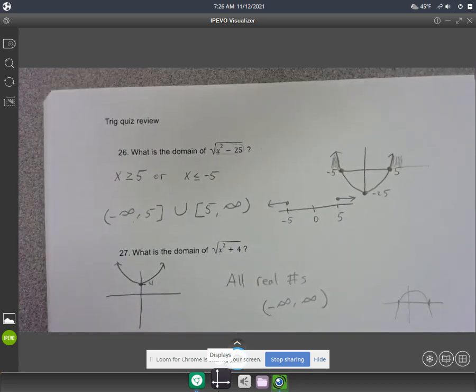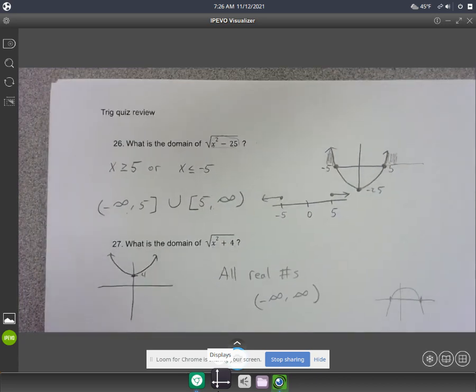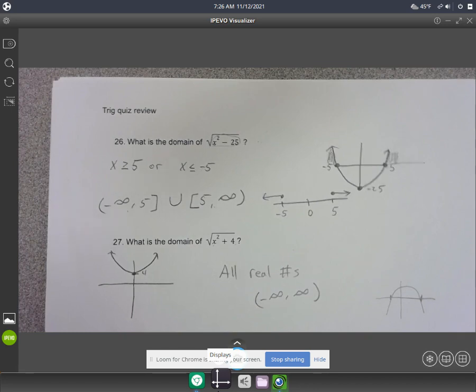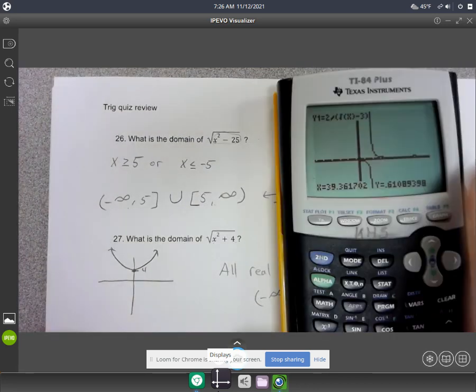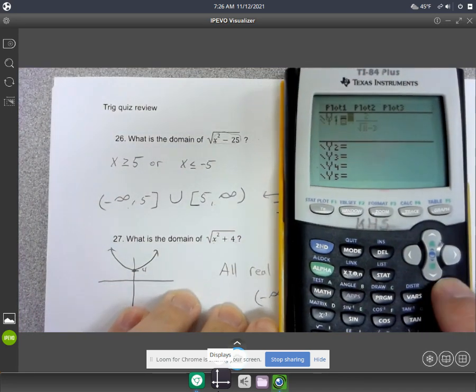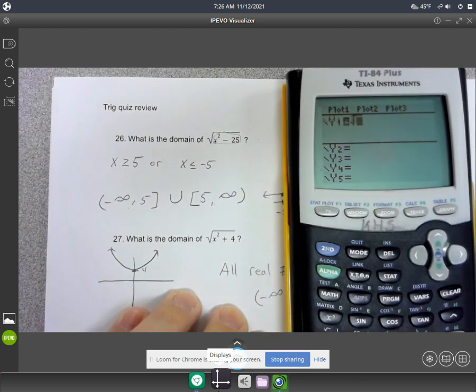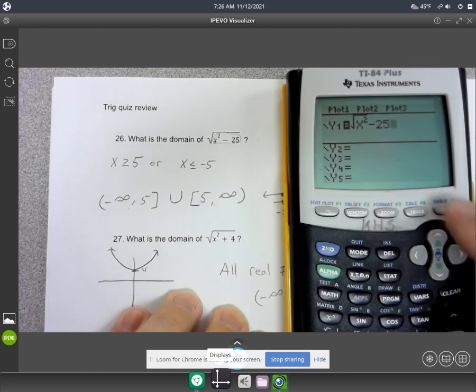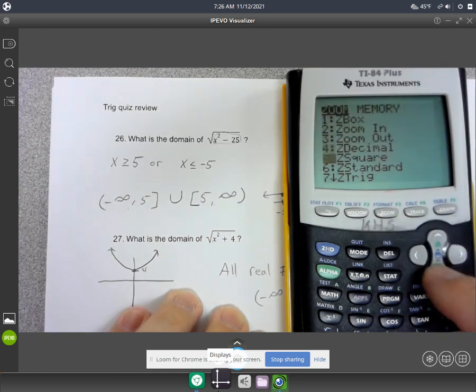All right. If I'm looking here, same thing. Let me look at 26. If I do the square root of x squared minus 25. Zoom standard.